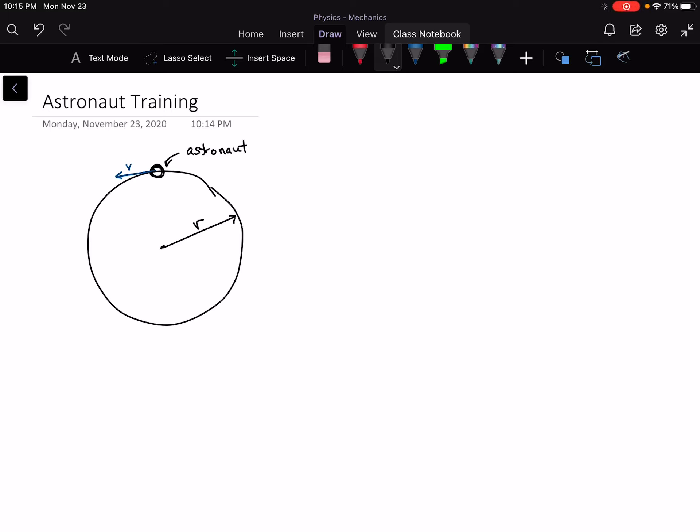All right, this is the astronaut training problem. I'll read out the text. During training, astronauts practice experiencing high accelerations like the ones they may experience in their missions. Part of this training involves being whirled rapidly in a circle with a radius of 5 meters at a constant speed.